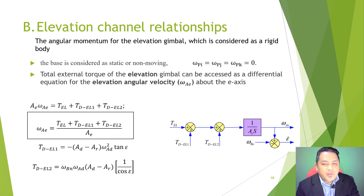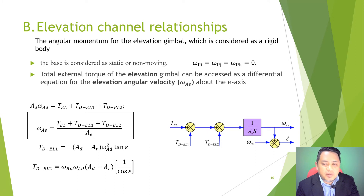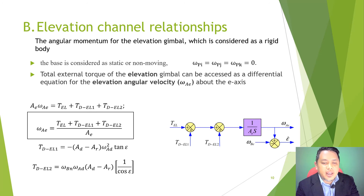Elevation channel relationship: the angular momentum for the elevation gimbal is considered as a rigid body. The base is considered as static or non-moving, so omega_pi equals omega_pj equals omega_pk equals zero. The total external torque of the elevation gimbal can be seen as a differential equation for elevation angular velocity, omega_ae, about the e-axis. We have two equations: td equals el1 and td equals el2. Here is the figure of the total torque elevation.